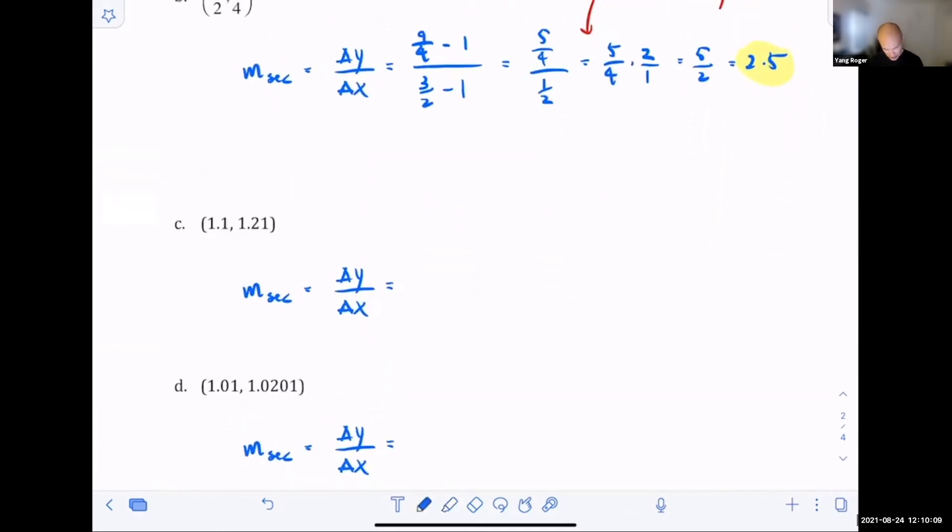For this third part C, that's going to be 1.1 minus one over 1.21. Do you see that mistake that I just made there? I put the x value on top instead of the y value. So that'd be incorrect. So I have to fix that. This would be 1.21 minus one over 1.1 minus one. When you subtract these guys, you're going to get 0.21 in the numerator, 0.1 in the denominator. And when you simplify that, that's going to give you 2.1.